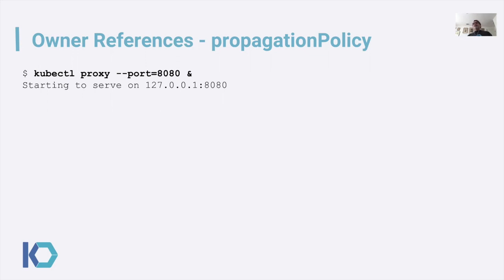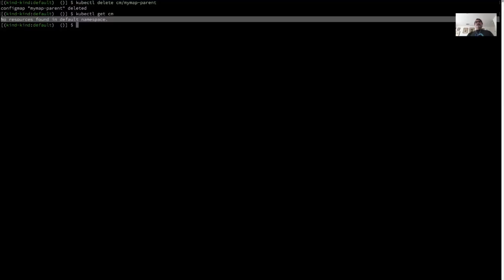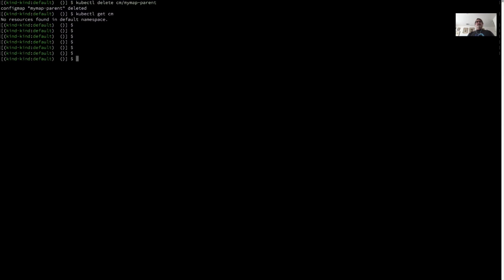There's something also called propagation policy, which the cascade option links to, which controls the order in which the nodes in the tree are deleted. Before this, I'm going to start up a proxy in the background and demonstrate the cascade equals false behavior.